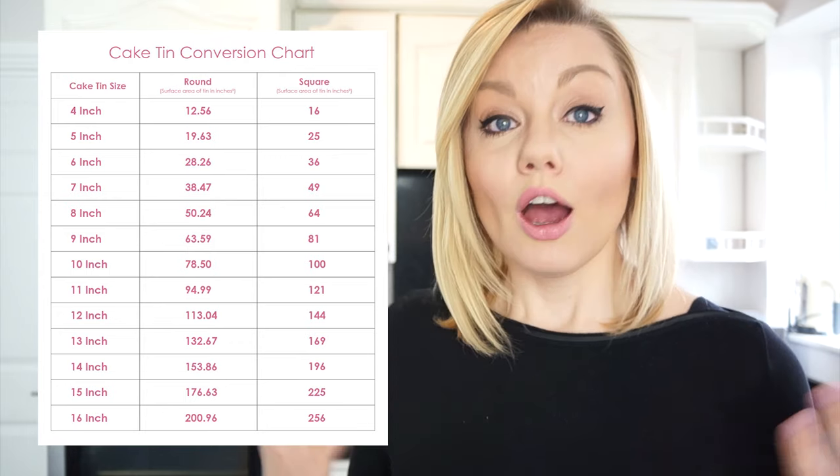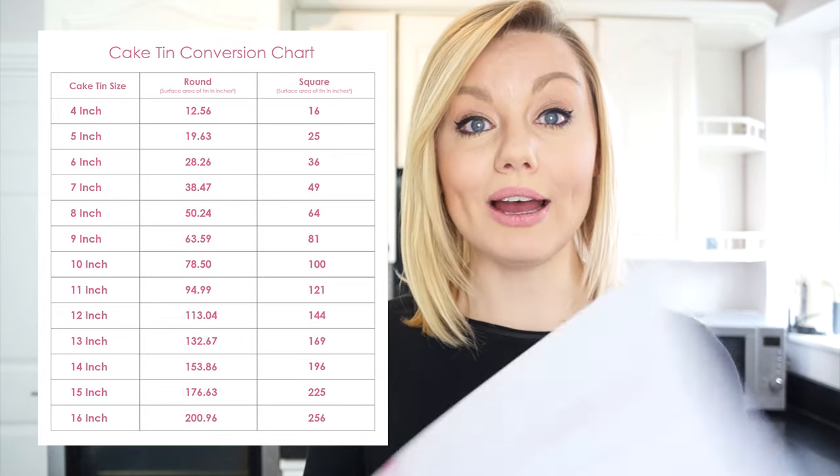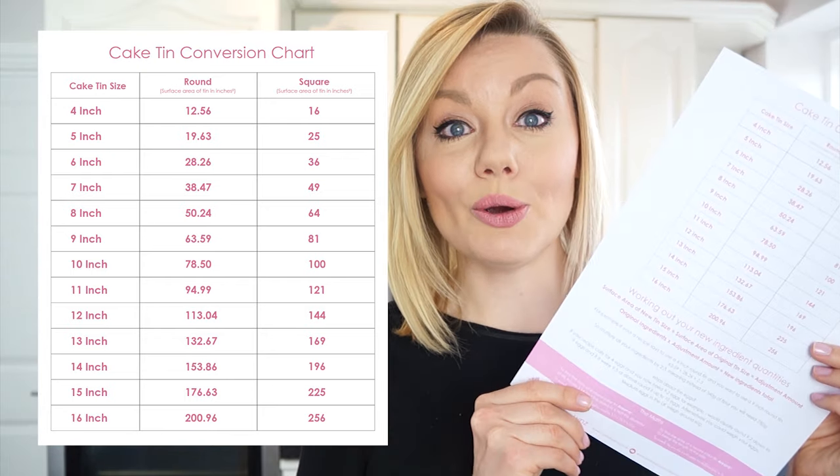The first thing we need to do is work out the surface area of the tin the recipe asks for and the tin we want to use. This does require a little bit of maths, but to make it easier I've created a conversion chart with different size tins ranging from a 4 inch tin right up to a 16 inch tin, both in round and square. I've worked out all the surface areas and I've also created a printable version — the link is in the description below.